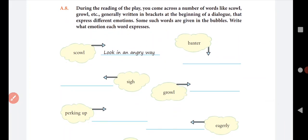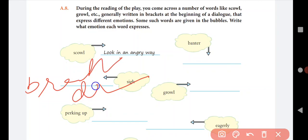During the reading of the play, you come across a number of words like scowl, growl, etc., generally written in brackets at the beginning of the dialogue that express different emotions. Some such words are given in the bubbles. Write what emotion each word expresses. What is the meaning of scowl? Look in an angry way. What is the sign meaning? Take a deep breath. Breathe deeply.